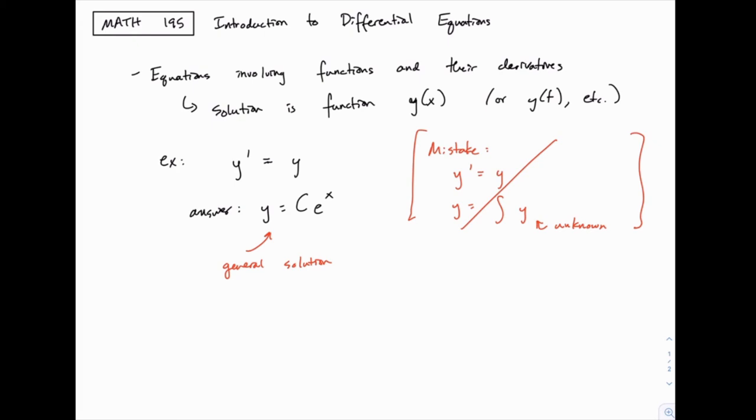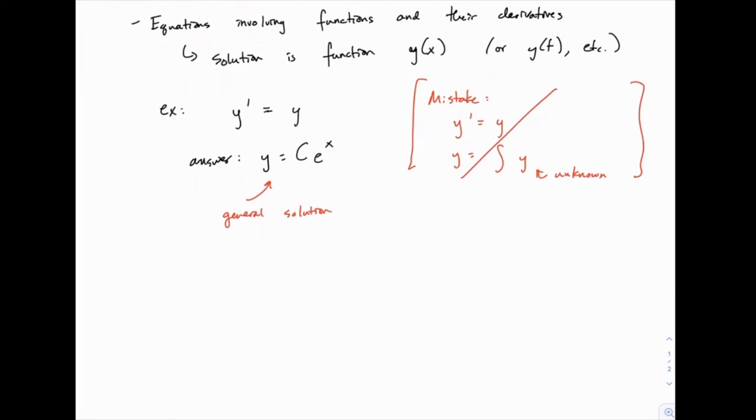If we want what's called a specific solution, meaning where we have a specific value for c, something like 2e^x or -4e^x, we would need a little bit more information to find that. So for a specific solution, meaning to find c, we need more information. Specifically, let's think about what that graph looks like, the graph of ce^x.